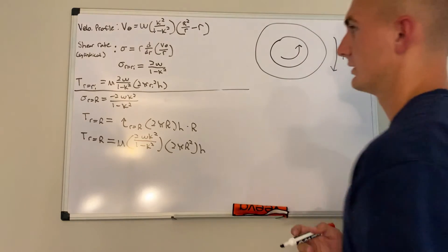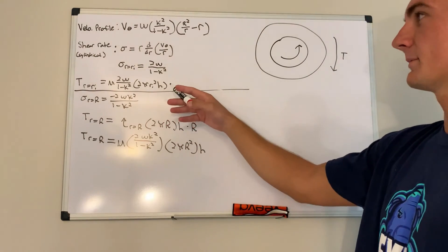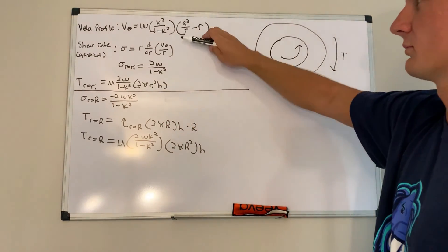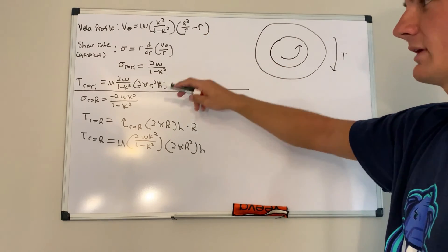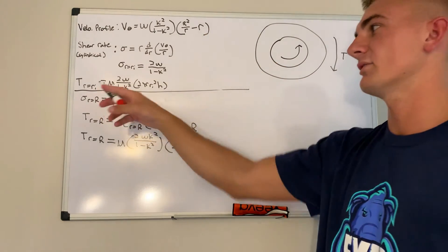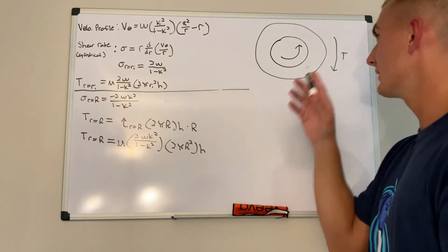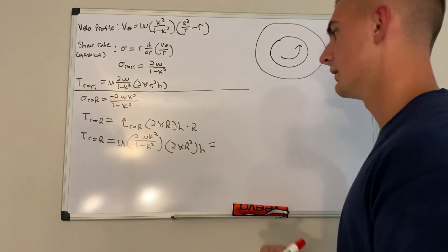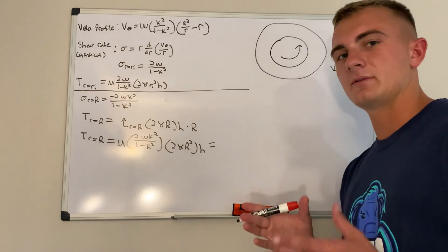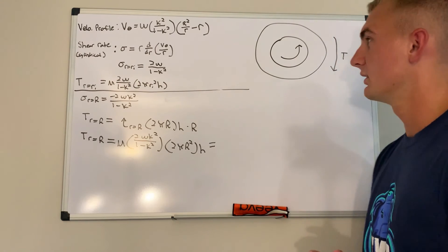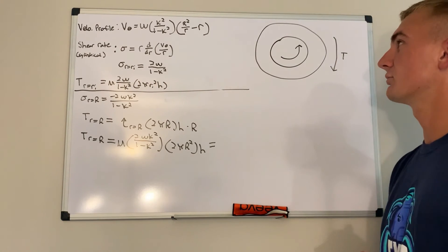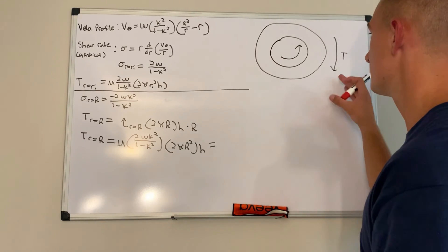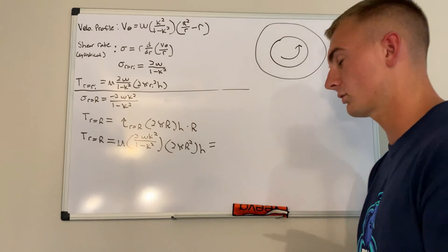We have now built up the torque expressions for both cylinders. The torque at the inner cylinder is mu times 2 omega over (1 minus k-squared) times 2π·Ri-squared times h. Let's set the two torque expressions equal and see if everything really cancels out — confirming that the torque on the inner circle must equal the torque applied at the outer circle.